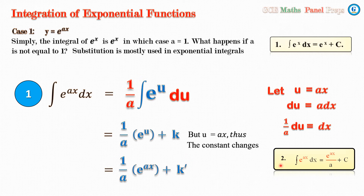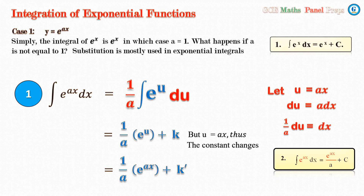Generally, when we integrate e^(ax) dx, we have e^(ax) / a + C. This is the general rule — you'll see this in your formula booklet as well.